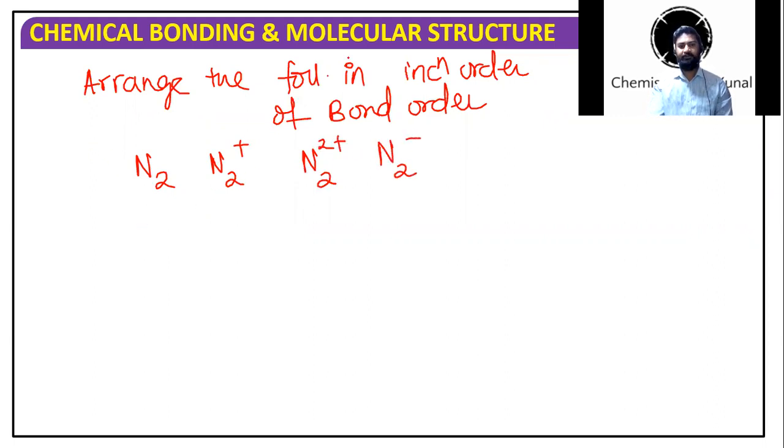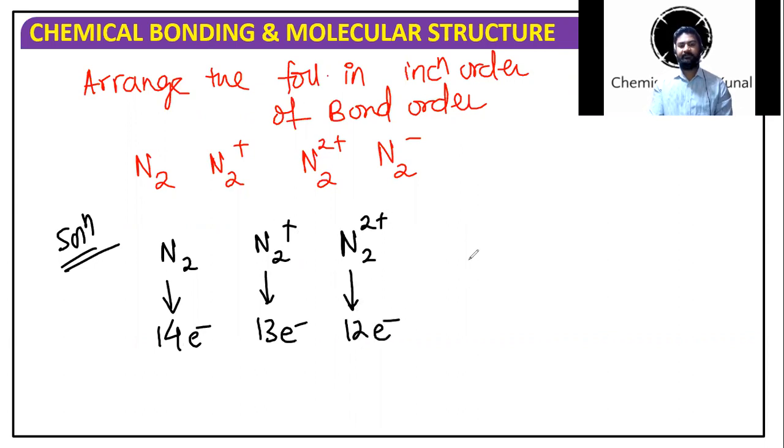So N2 will be 14 electrons. N2+ is 13 electrons, N2 2+ is 12 electrons, and N2-, see 7 plus 7 is 14, 14 plus 1 gives 15 electrons.